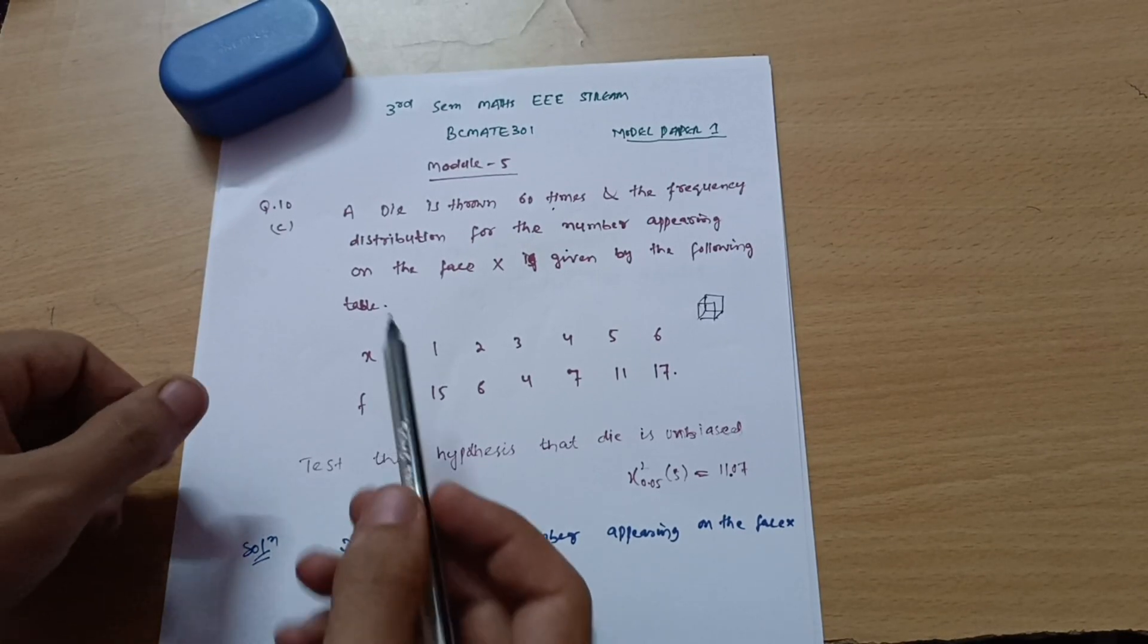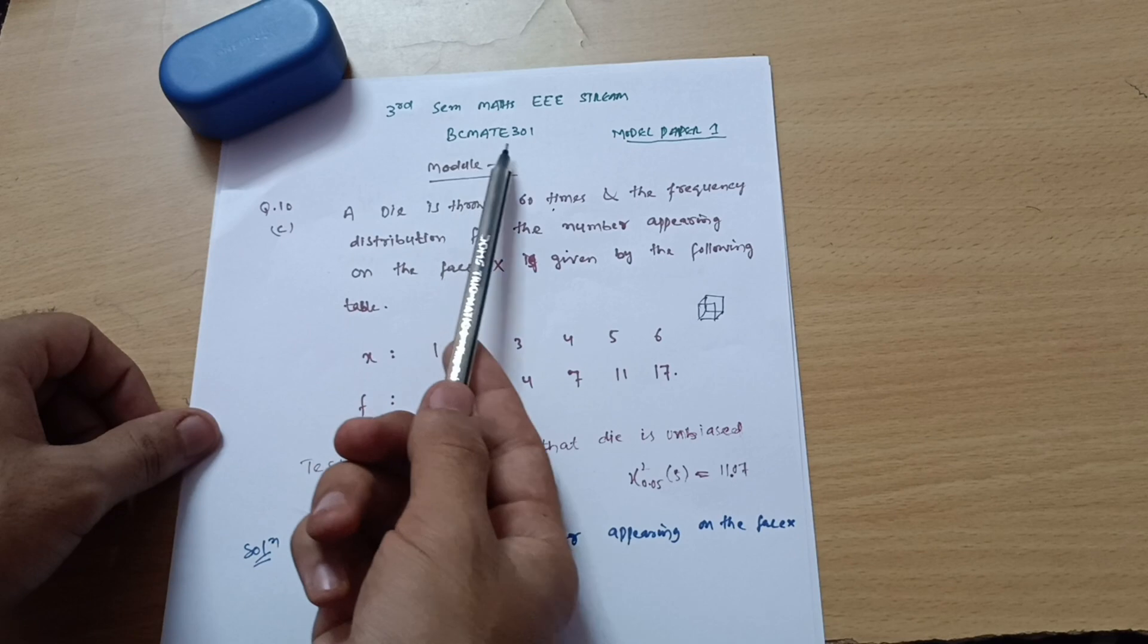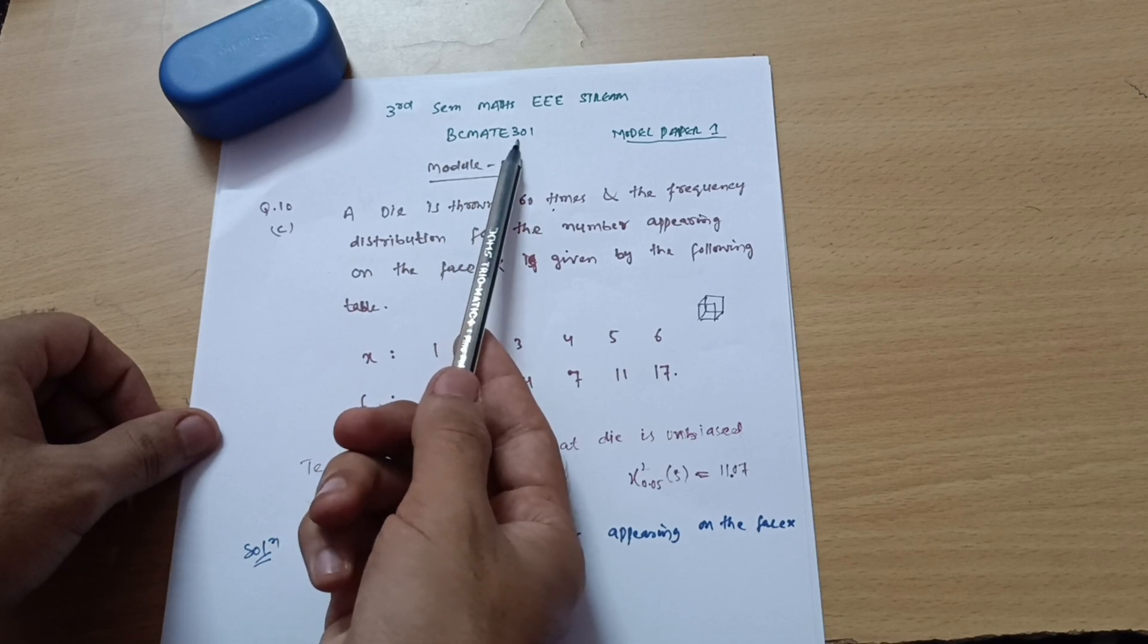Dear friends, welcome back again. We are discussing the model question paper for the Tribhuvan University stream students, third semester mathematics. Subject code is BCMAT E301.